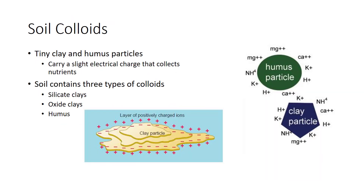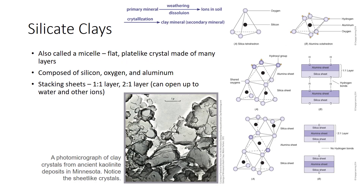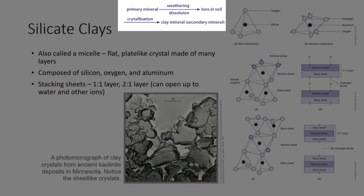Nutrients are adsorbed on soil colloids — tiny clay and humus particles that carry a slight electrical charge. This charge is important because it attracts nutrient ions. The soil contains three types of colloids: silicate clays, oxide clays, and humus. Clay minerals are not simply pieces of silt or sand broken into tinier particles. A clay particle is a tiny crystal of mineral formed in the soil from the weathered products of minerals like feldspar or mica. Feldspar and many others are primary minerals of the Earth's crust, while the clay minerals that form from the products of their weathering are called secondary silicate minerals, as shown in the process equation.